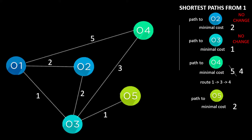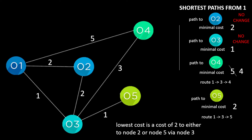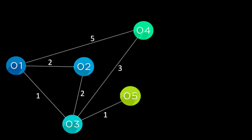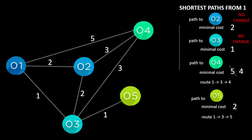The route to node 5 is via node 3, so 1 → 3 → 5 with a cost of 2. We can either go from node 1 to 2, or node 1 to 3 to 5 — there are two options. Let's explore option 1: go to node 2. From node 2 we can go to node 4, but there's no change in our shortest path to any of the nodes. The lowest cost next to try is node 5.